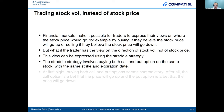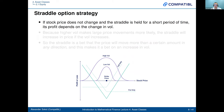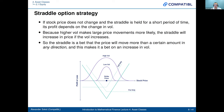The straddle strategy involves buying or selling both a call and put option on the same stock with the same strike and expiration date. Buying a straddle involves buying call and put options on the same underlying stock with the same strike and expiration date. At first sight, buying both call and put options seems contradictory, because a call is a bet the price will go up and a put is a bet the price will go down. But if the stock price doesn't change and the straddle is held for a short period, the profit depends on the change in vol. Higher vol makes large price movements more likely, so the straddle increases in price if vol increases. The straddle is a bet that the price will move more than a certain amount in any direction.